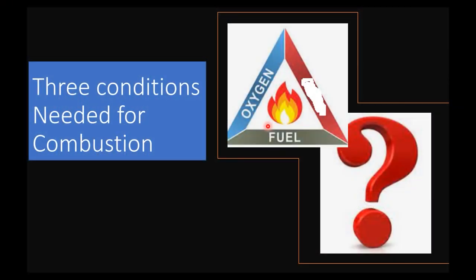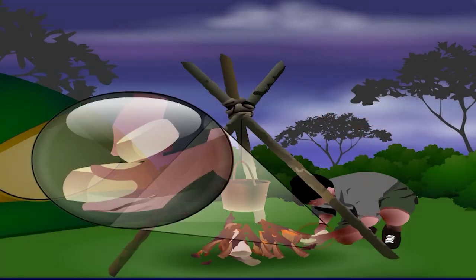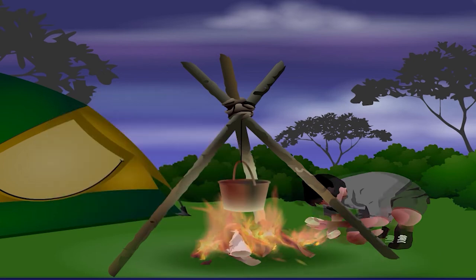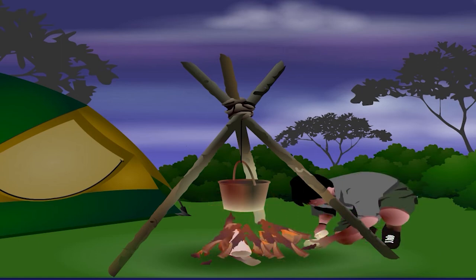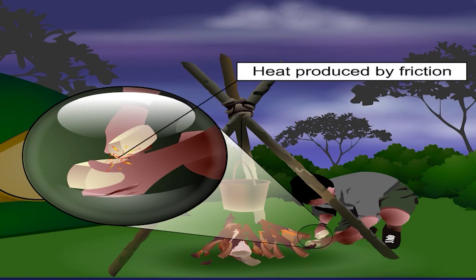You have learned that fuel and oxygen are needed for combustion. What else is needed? Besides wood and oxygen, heat is also required to start a fire. Heat produced by friction is used to start a fire in this case.